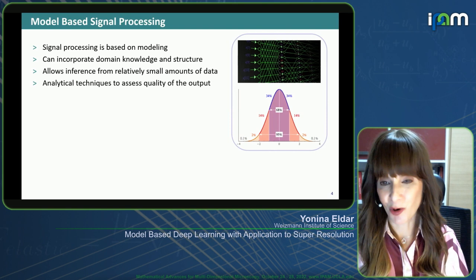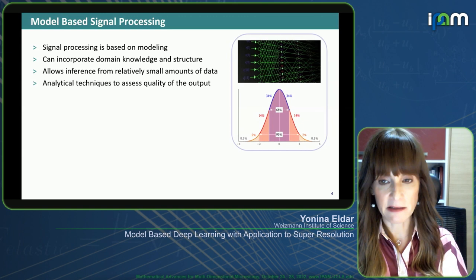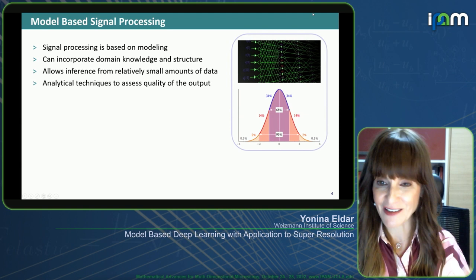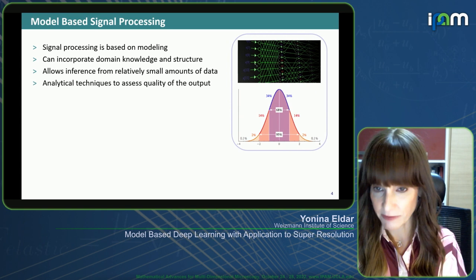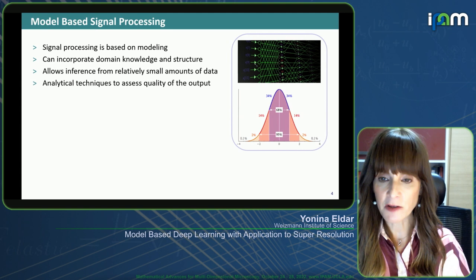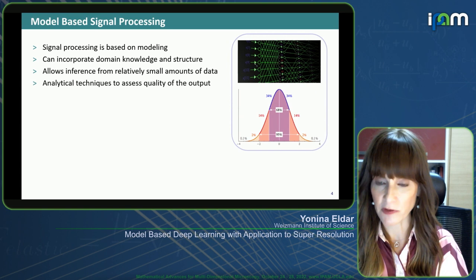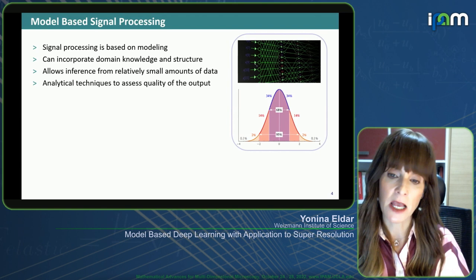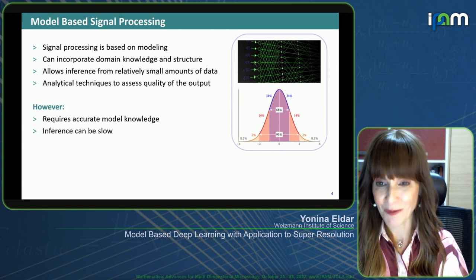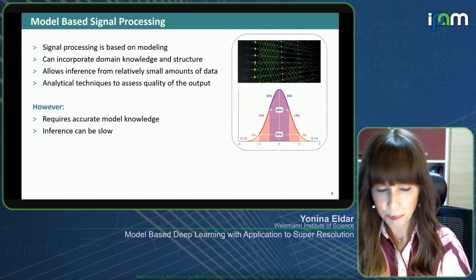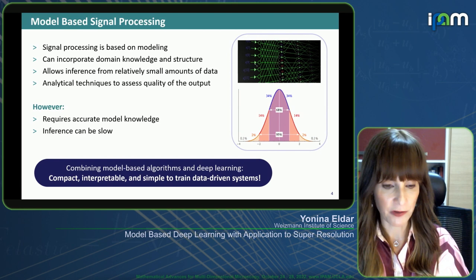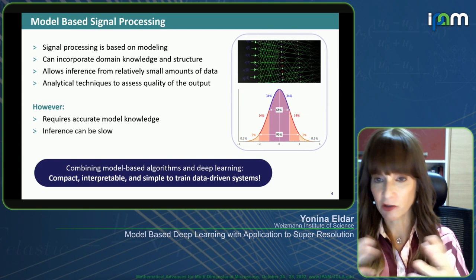With deep learning, we could get amazing empirical success — things like spawning fake faces, very good classification error rates. But this comes at a price. We need really large training sets, the computational cost can be very high, the methods are not necessarily interpretable, and they're often not very robust and don't generalize well. In our lab in medical imaging, we see it all the time: train on a large dataset from one hospital, but when you apply results to a different hospital, it doesn't work so well anymore.